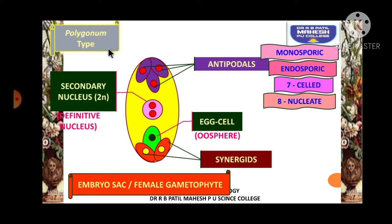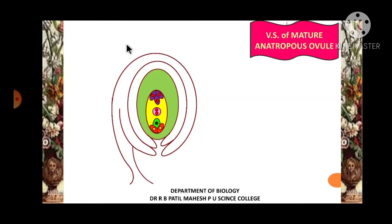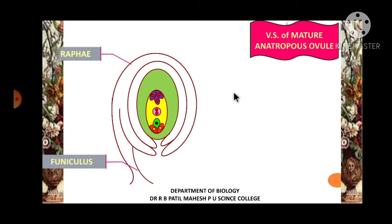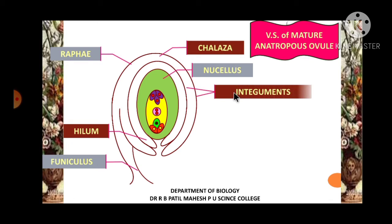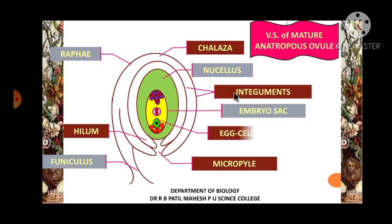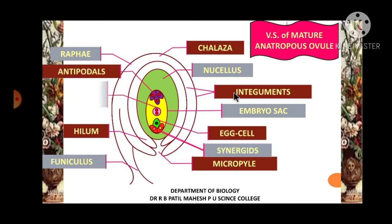It is called the Polygonum type because the structure of such an ovule was first studied from the plant Polygonum. This is a vertical section of the ovule showing parts like funicle, raphe, hilum, nucellus, chalaza, integuments, micropyle, embryo sac, egg, synergids, antipodals, and secondary nucleus. This diagram can be asked for 5 marks.